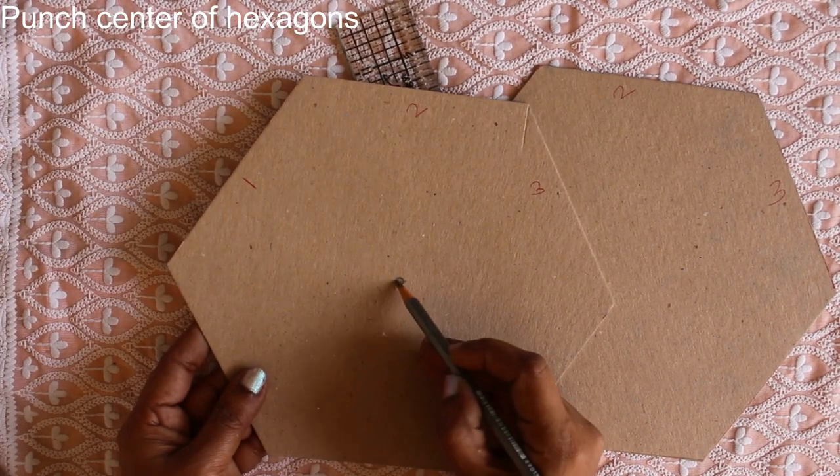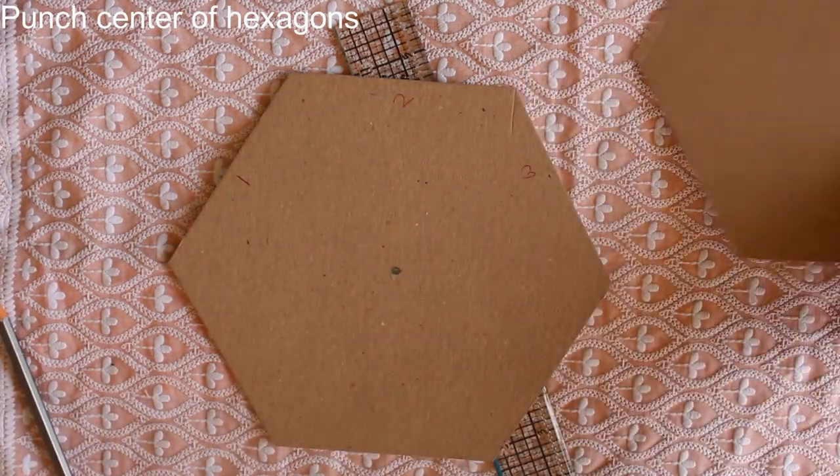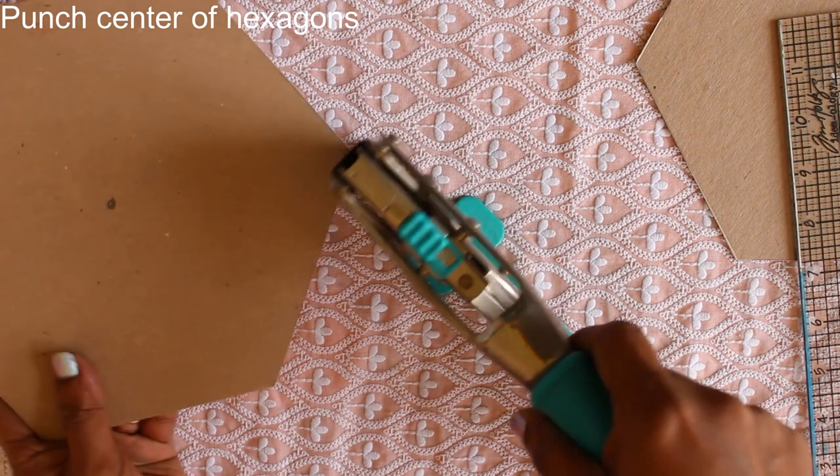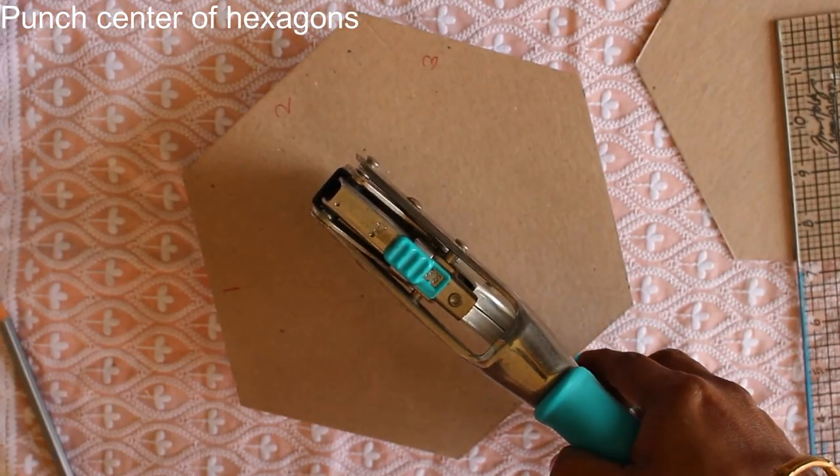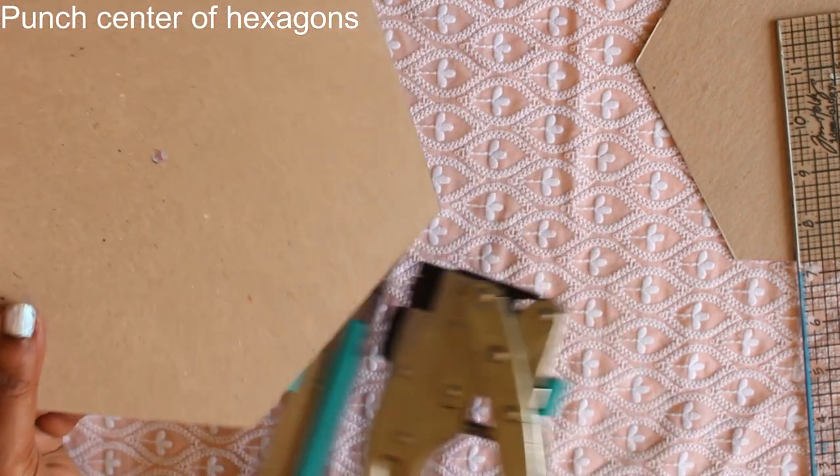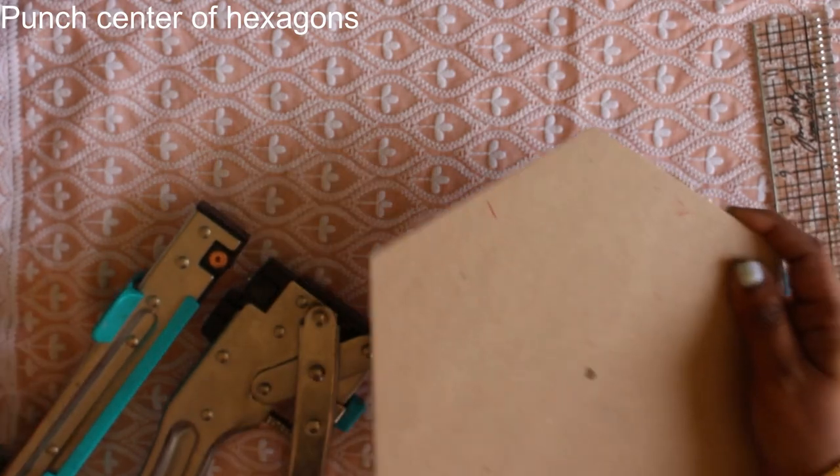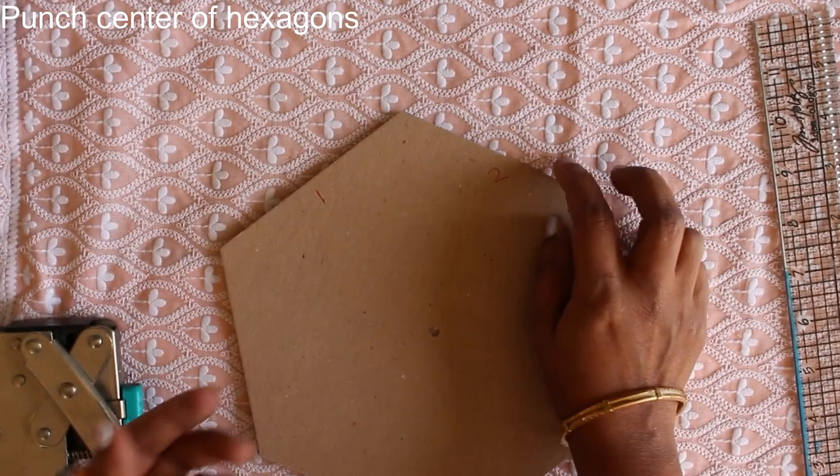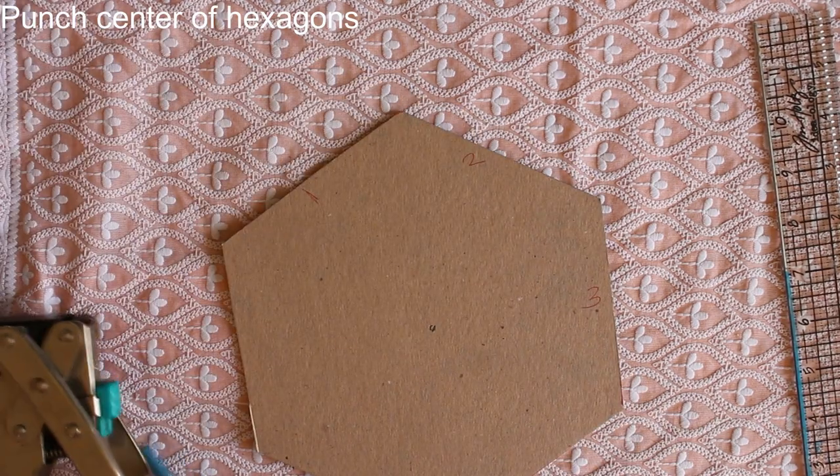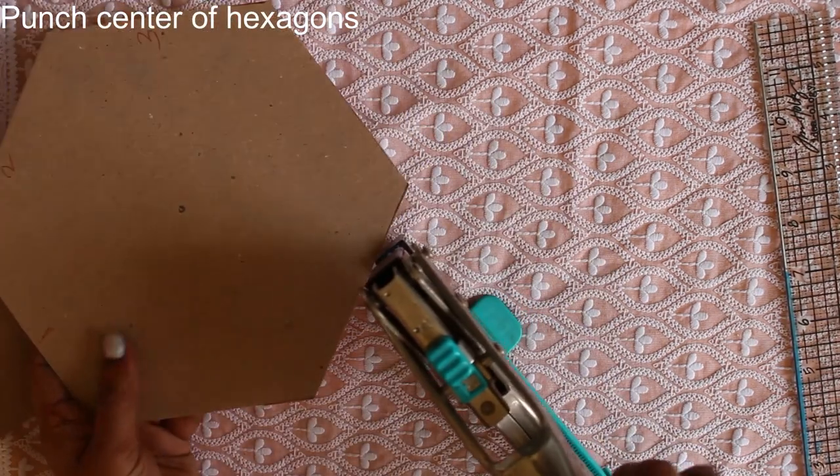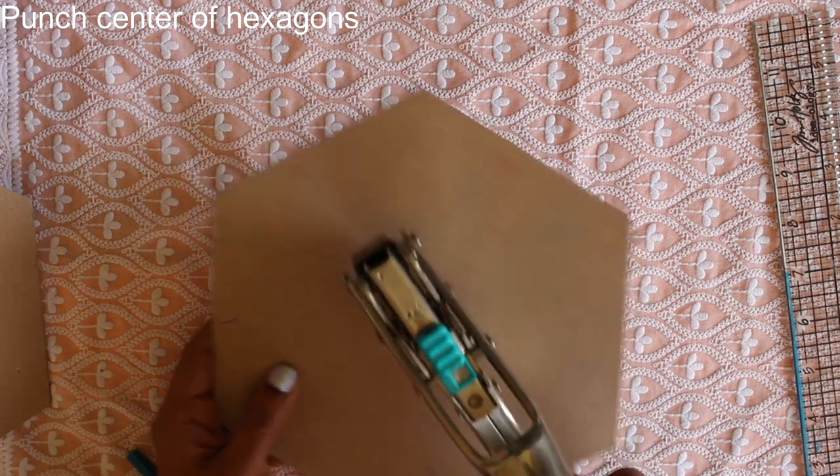So these are the 2 hexagons cut from chipboard. Mark the centers of the hexagons and punch them out. I have used a crop-a-dile here to punch out the holes. The hole should be big enough to thread a fairly thick skewer through it. The skewer is going to form part of your rotating mechanism and I will show that to you later in the tutorial. So I have used one hexagon to punch a hole in the other by using it as a template.